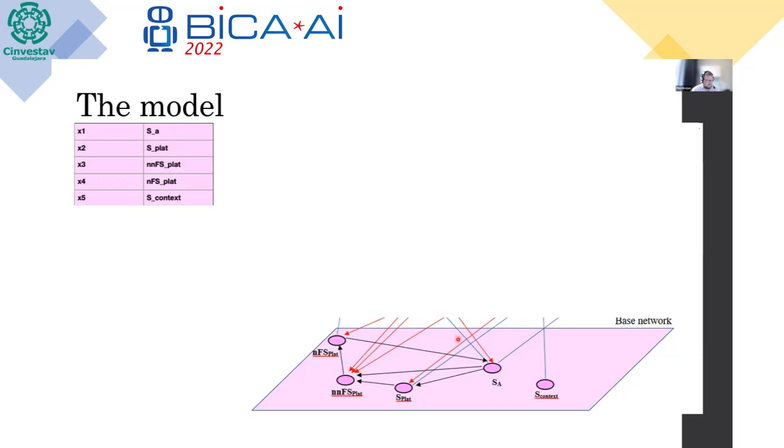We modeled the process where the user SA is influenced by a fake state from the platform. So the platform presents certain content and influences the user. The user, of course, influences the platform as well. However, the user never knows the true intention of the platform. So this is one of the important parts.